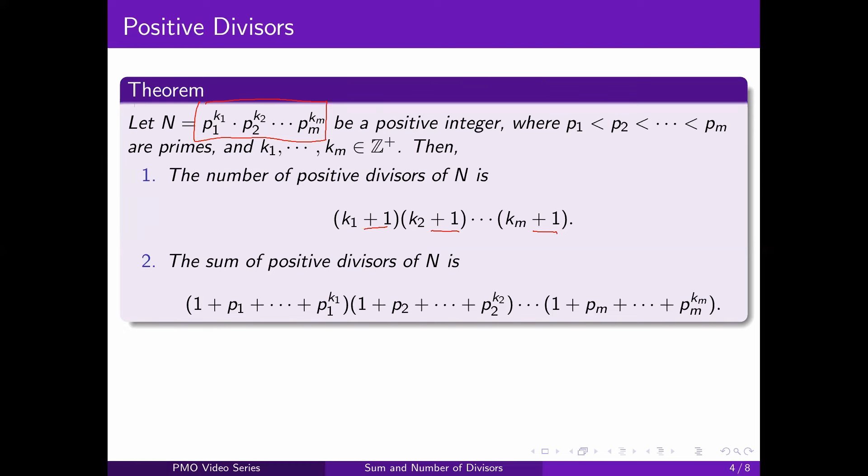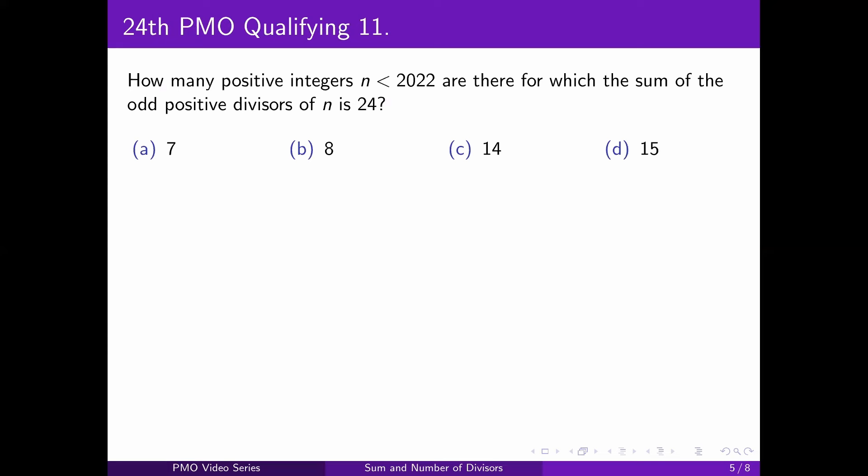Now let's try applying these on some PMO problems from the 24th PMO. First, number 11: how many positive integers N less than 2022 are there for which the sum of the odd positive divisors of N is 24? Pause the video here and come back when you're ready to see the solution. The first thing we need to note is that we're only concerned with the odd divisors of N — not all the divisors of N.